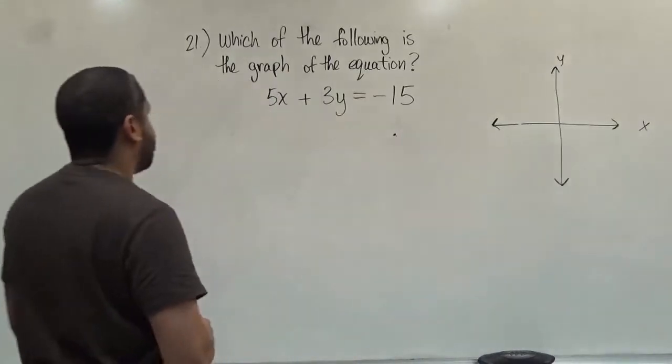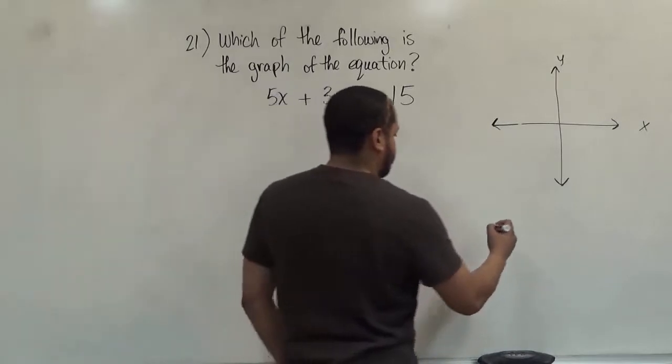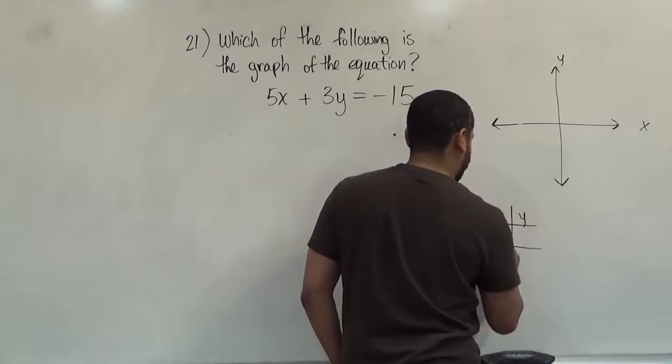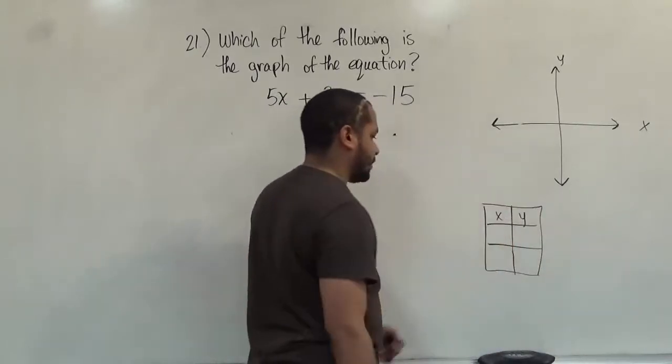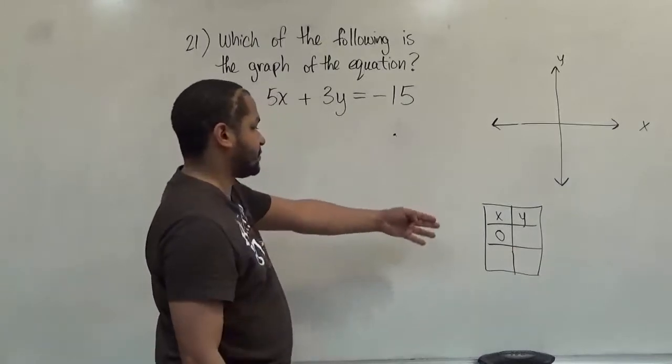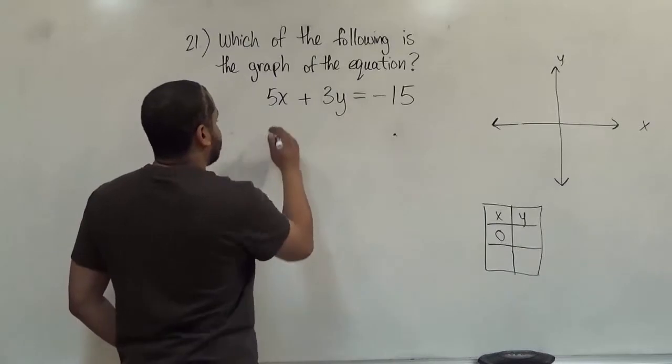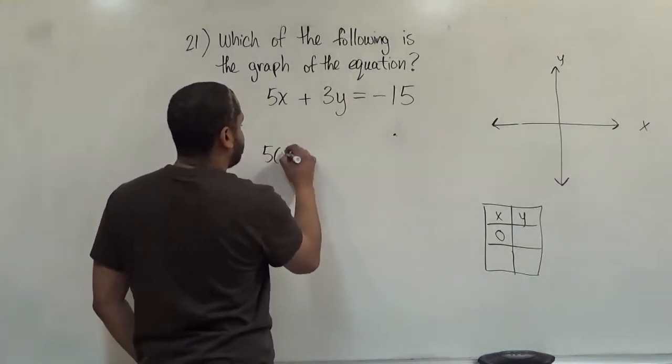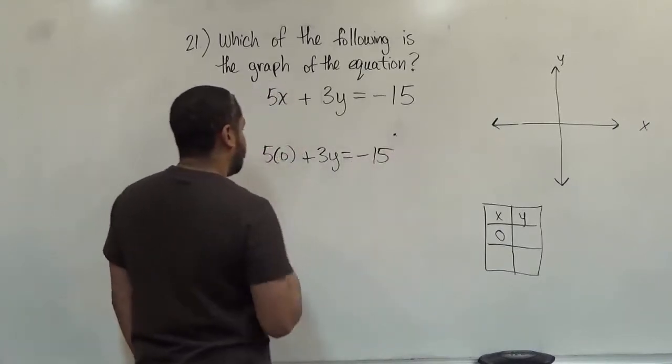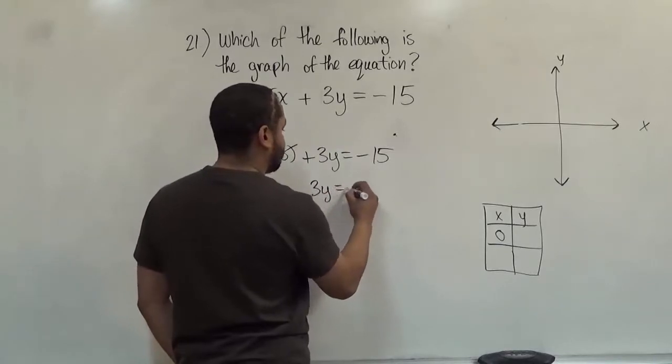So our first step here is to find the x intercept. To find the x intercept, what I want to do is substitute the value 0 for x. And here's my table for intercepts. And what I'm going to do here is I'm going to place a 0 for the x. The solution when I substitute 0 for x will be my y value for the coordinate that it creates. So here I'm taking the equation and I'm substituting a 0 for x.